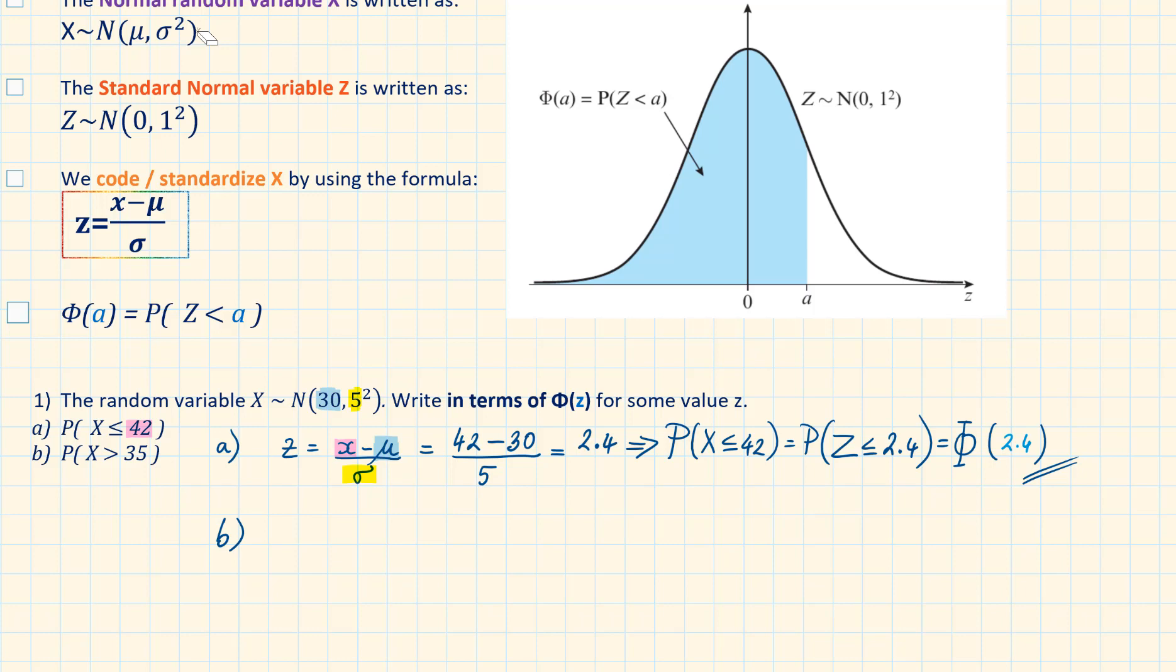For part b, again we start by standardizing 35 by using the formula z = (x - μ)/σ. Replacing the values we have (35 - 30)/5. This is equal to 1. So the probability of X being larger than 35 is equal to the probability of Z being larger than 1.